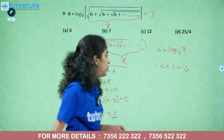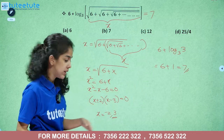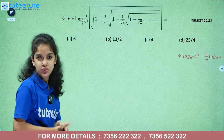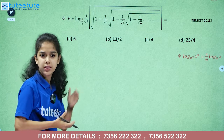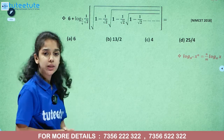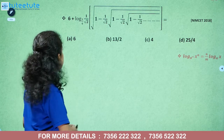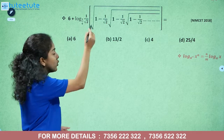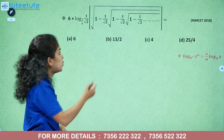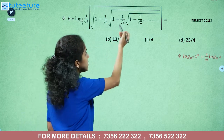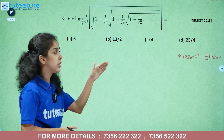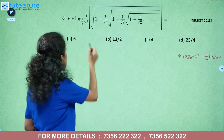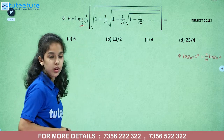Now, in the previous year exam, there is a similar type of question. The problem is: 6 plus log base 1/4 of: 1 by root 2, times root of 1 minus 1 by root 2 times root of 1 minus 1 by root 2, and so on. This is a repeating pattern.